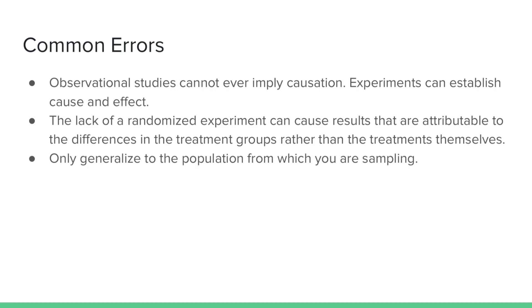One common mistake is making conclusions from results from an observational study. While observational studies can show associations between two different variables, they make no attempt to control for the effects of other variables by using good experimental design. Another common mistake is to not use randomized design. Splitting subjects into different groups without randomizing leads to useless results because it is unclear whether the observed results happened because of the differences between the treatment groups or the treatments themselves.